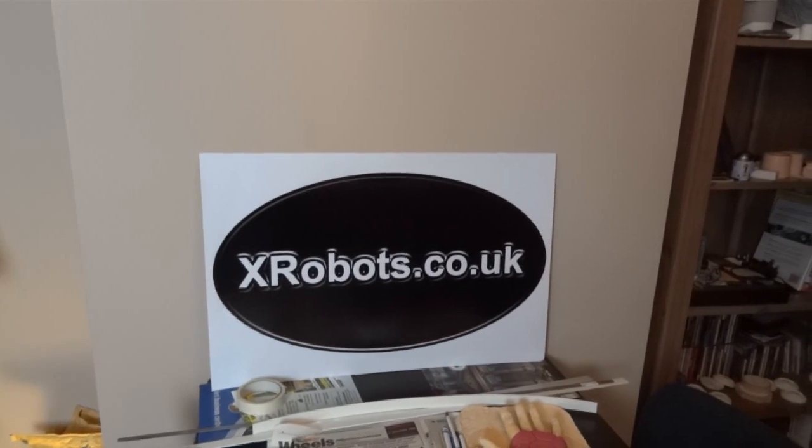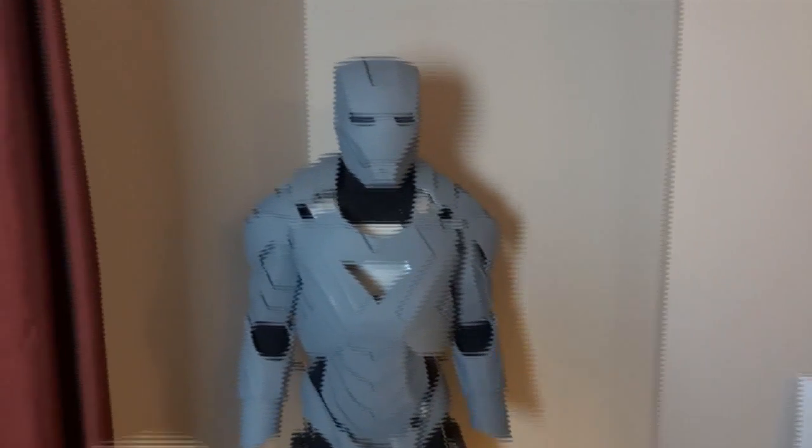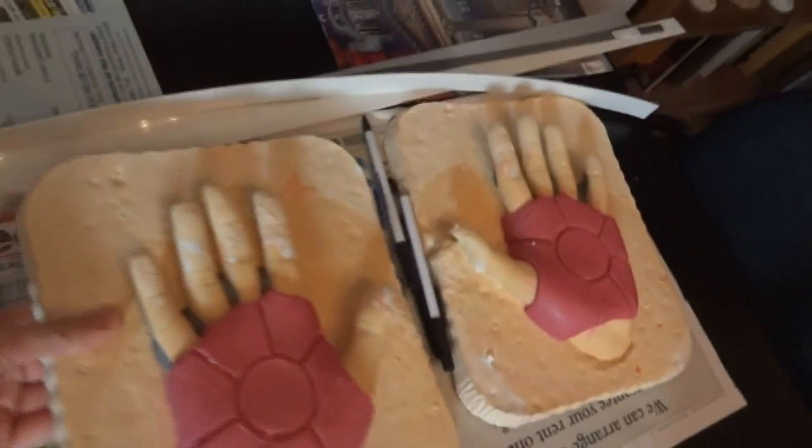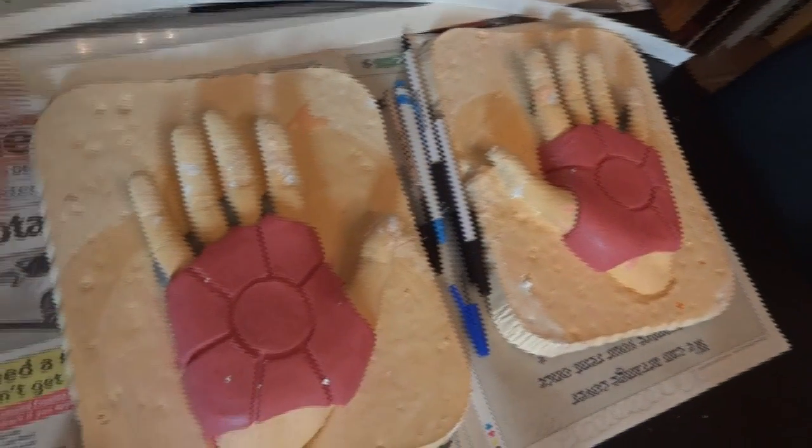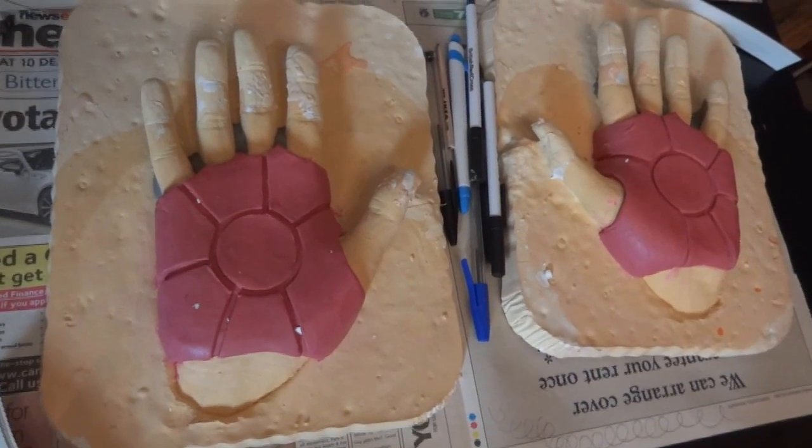Hello, it's James from xrobots.co.uk. This is part three of my Iron Man hands. Last time I made these sculpts over life casts of my hands. I've then gone on to mold them and today I'm going to be making the casts.